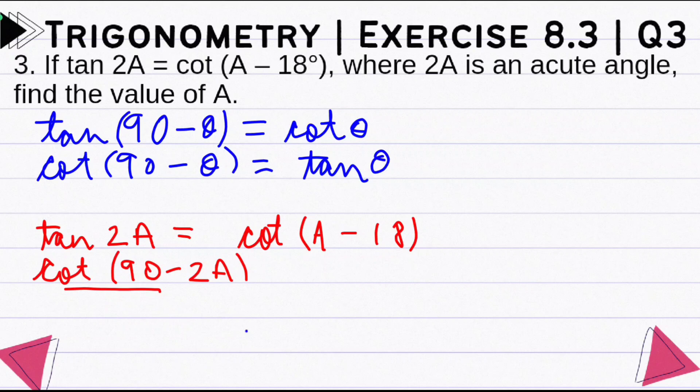So you can write tan 2A equals cot(A minus 18°) as cot(90° minus 2A) equals cot(A minus 18°). If we compare it, cot and cot are equal, so what will the angles be? They will be the same.